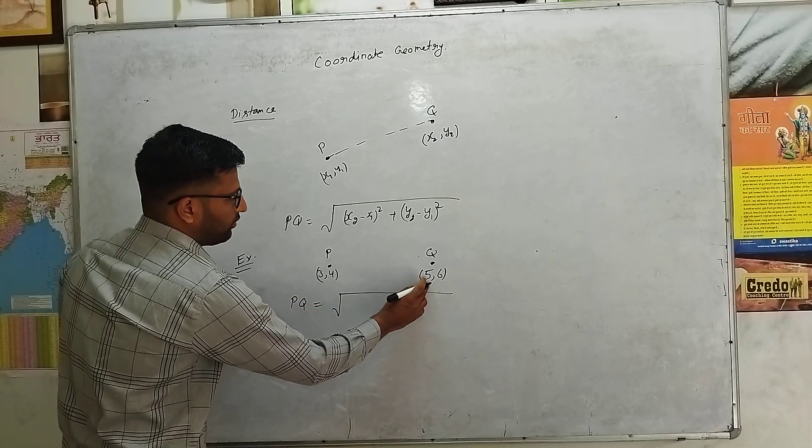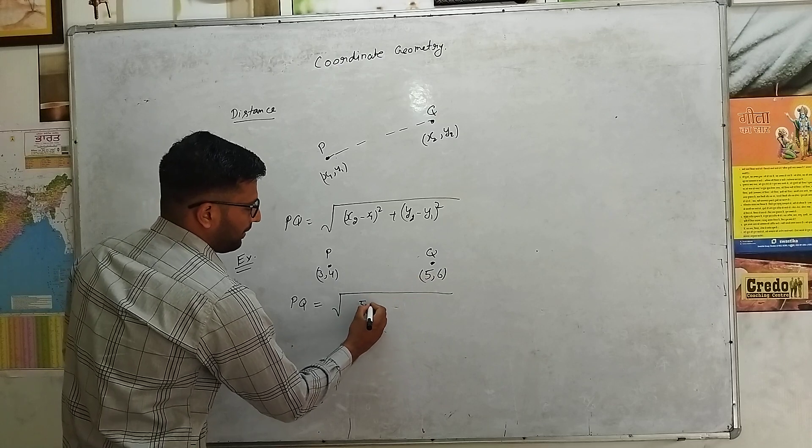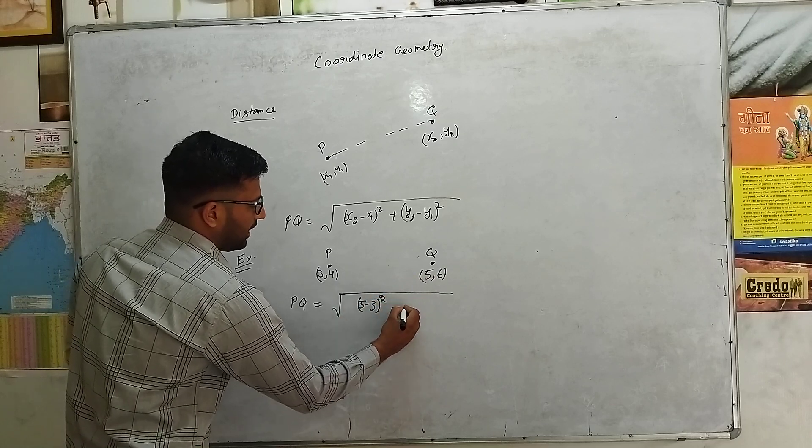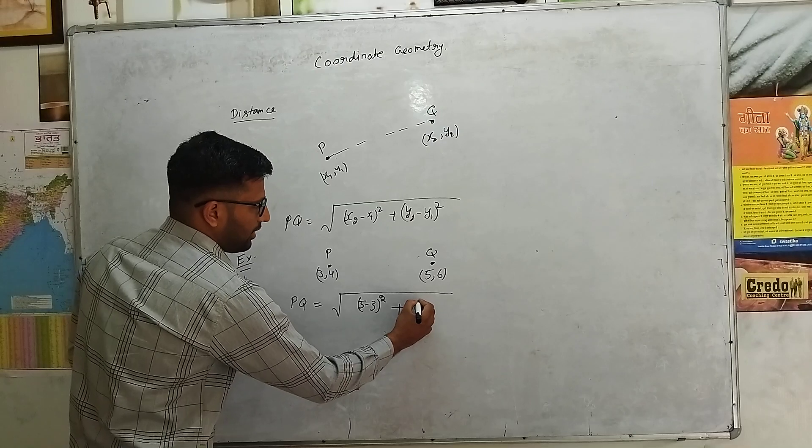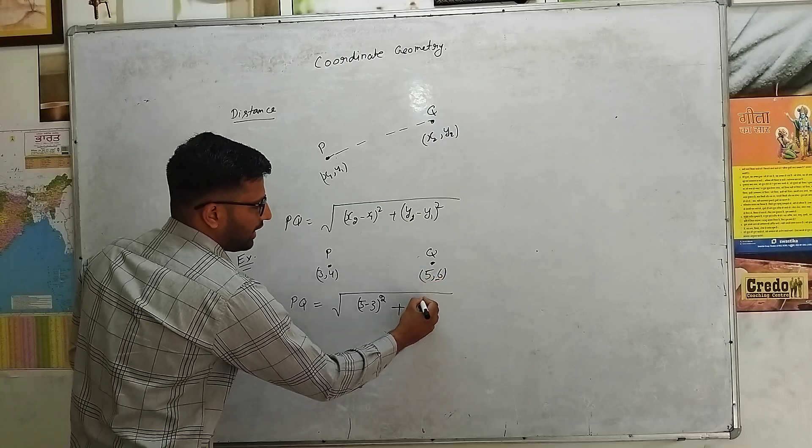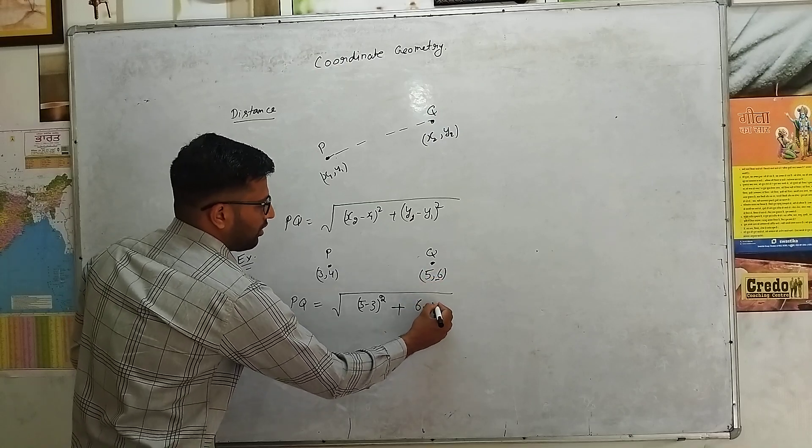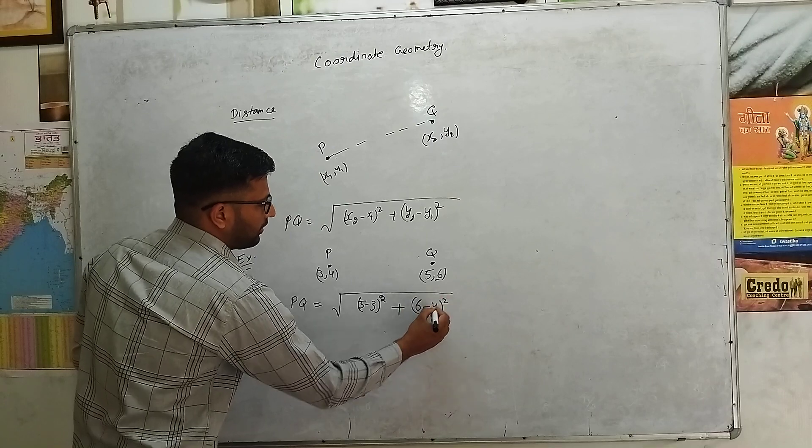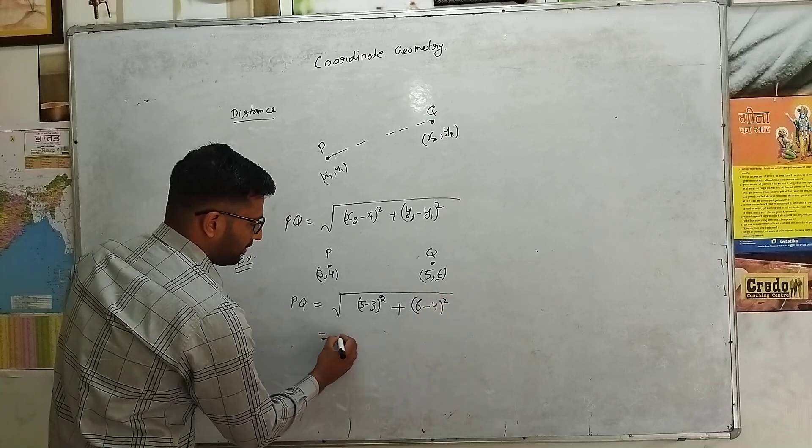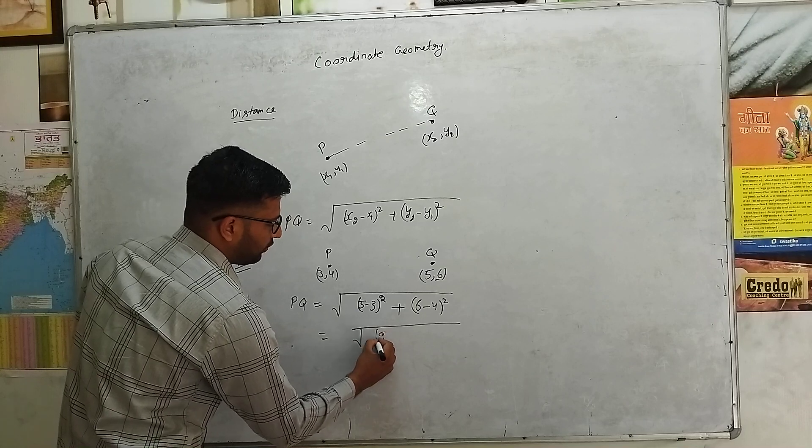X2 is 5, and 5 minus 3 subtracting, running side of the square plus y2 will be 6, 6 minus 4, y1 subtracting. 5 minus 3 is 2 to the square.